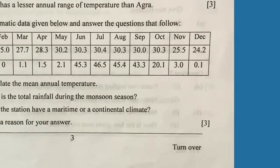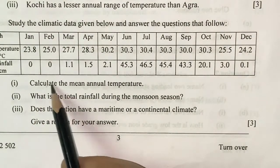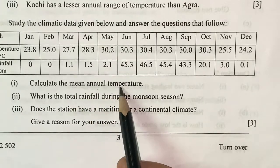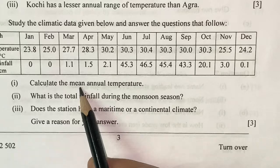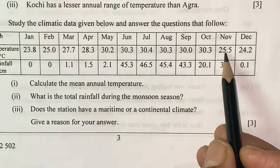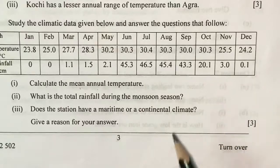Question number one is calculate the mean annual temperature. When the term mean annual temperature is there, it means that you have to add up all the values of temperature and divide it by total number of months, that is 12.